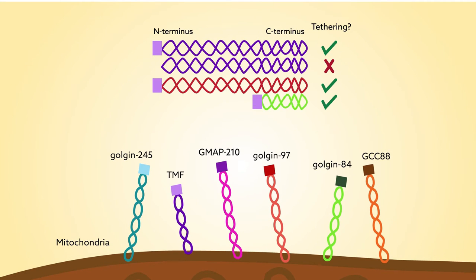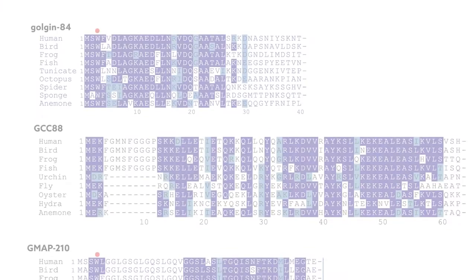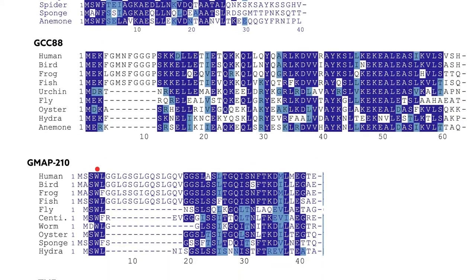When attached to other proteins, these sequences were sufficient for tethering. Perhaps not surprisingly, the postal codes were generally well-conserved across species.